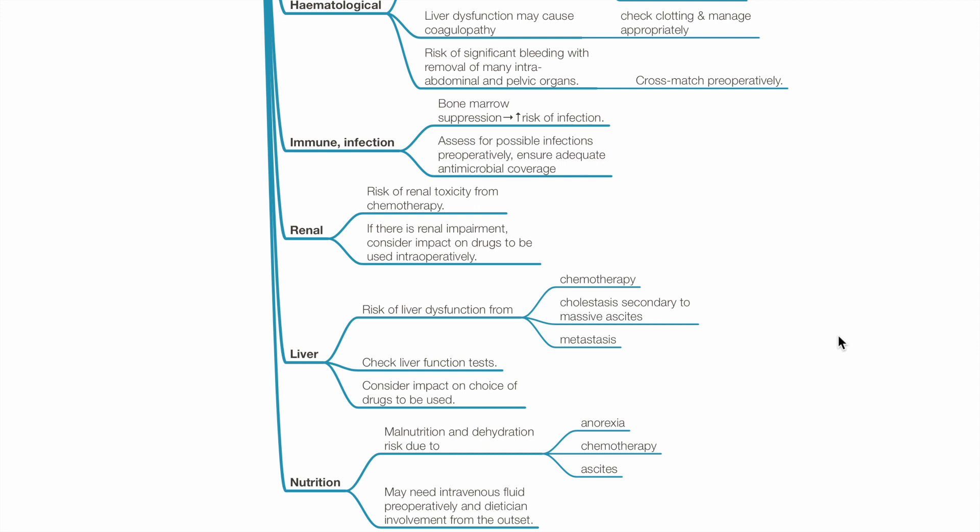Renal. There is risk of renal toxicity from chemotherapy and this dictates drugs used perioperatively. Liver: There is risk of liver dysfunction from chemotherapy, cholestasis secondary to massive ascites, and metastasis. Assess via liver function test and consider impact on choice of drugs to be used.